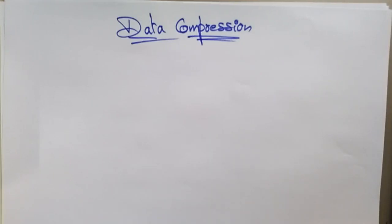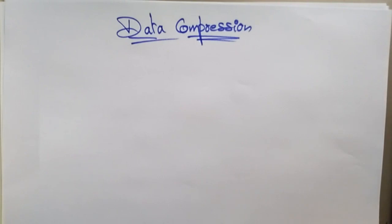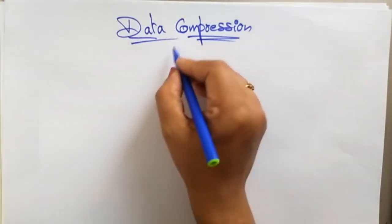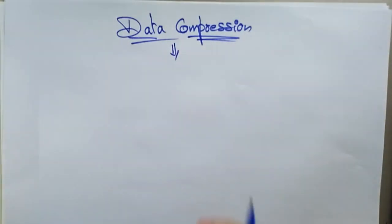Welcome back. Coming to the next topic in computer graphics: data compression. Data compression means you're reducing the size of a file without affecting the original file. You've seen zip files — a zip file just compresses a file. If you have a very large file and want to send it to someone, you need to compress it; otherwise you can't send that large file through the internet. That is data compression.